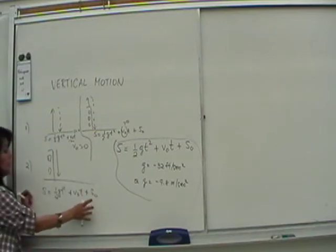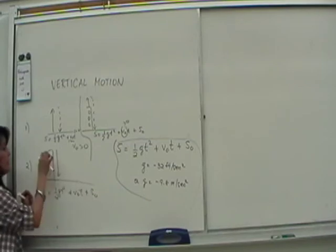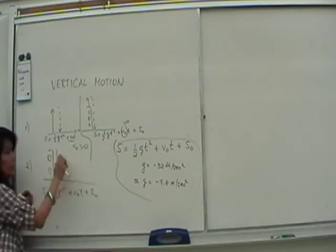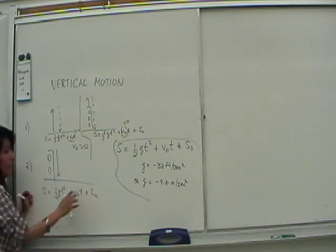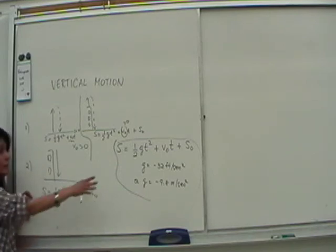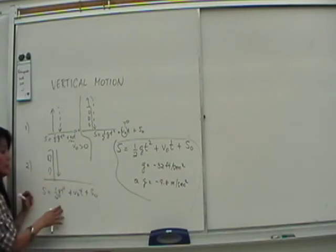We need an initial position because the position s is always measured from the ground. So there's always the initial position which is the height. Half g t squared would be a negative quantity, because g is always going to be negative.